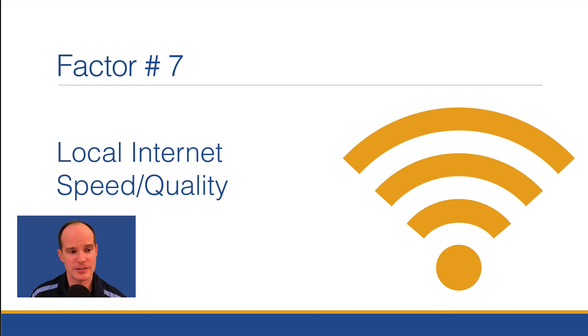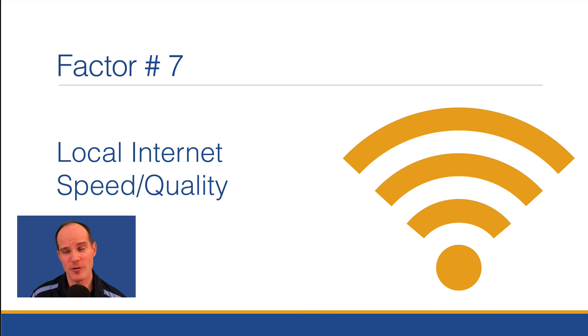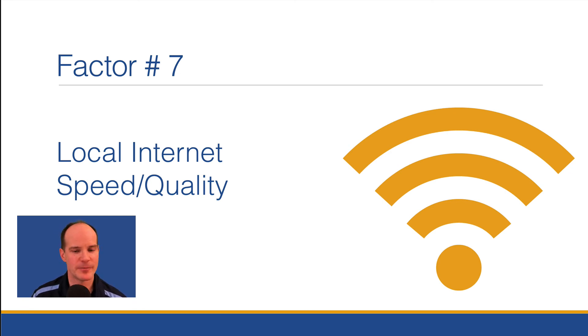Factor number seven, one of the lesser factors, is your local internet speed and quality. If you have decent speed — let's say 50 megabits down and 50 up — that's going to be more than adequate to provide a good FileMaker experience if all the other factors are in place. If you have really poor internet, let's say only one megabit down and one megabit up, such as shared Wi-Fi at a hotel or airport, or if you're in a rural location with lousy internet, that will in fact play a factor on your experience with FileMaker. But if all the other things are in place and you have decent internet, factor number seven won't be a problem.